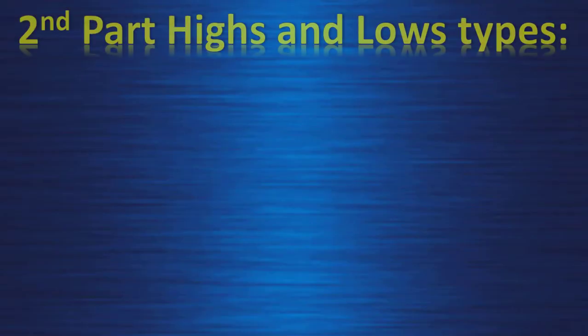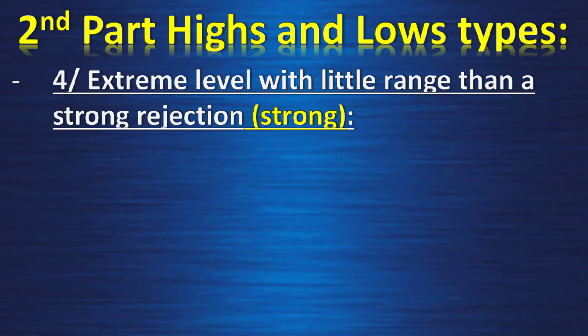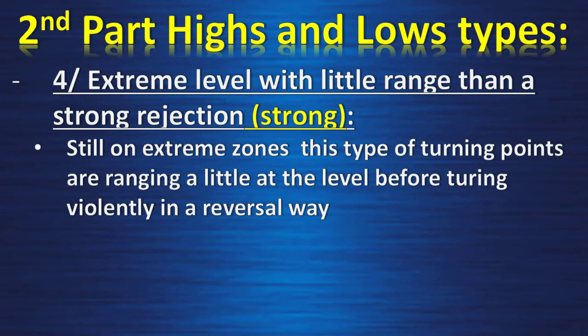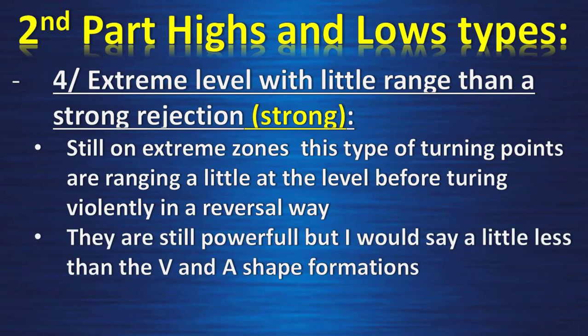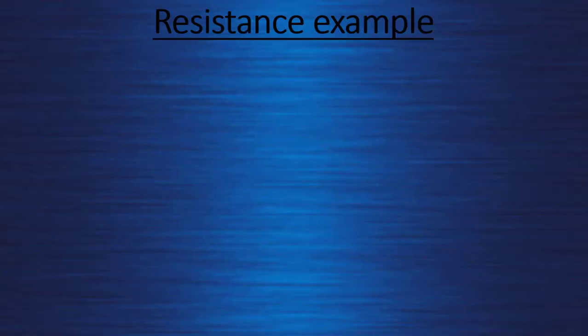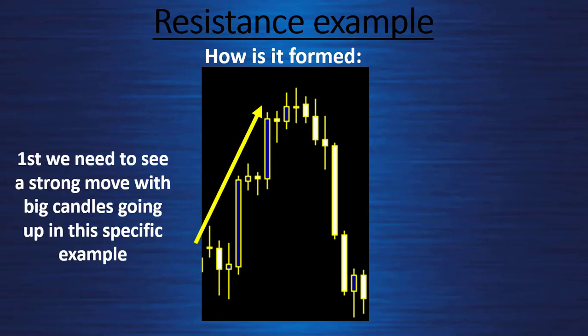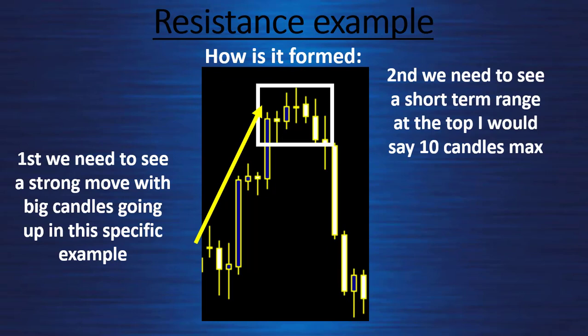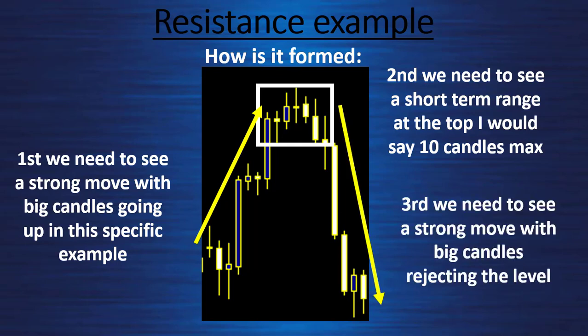The fourth type is an extreme level with a little range then a strong rejection, still at extremes. On this type, turning points range a little at the level before turning violently in a reversal. They are still powerful but a little less than V and A shape formations. We need a very strong move with big candles going up to reach the resistance level, then a short-term range at the top — 10 candles maximum — then a strong move with big candles rejecting the level.